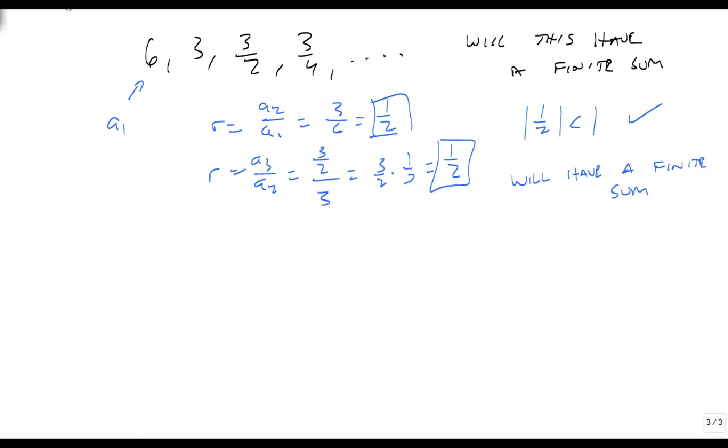What about instead if we do the same thing, but with 16, 24, 36, 54, 81, dot dot dot. Well, again, we know a1, which isn't really relevant to this part of the conversation. But r is equal to a2 divided by a1, which is 24 over 16, which is 3 halves. If we do the same thing with a3 over a2, that gives me 36 over 24, which is also 3 halves. So this, sure enough, is a geometric sequence.